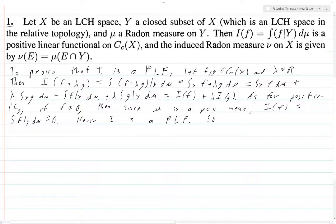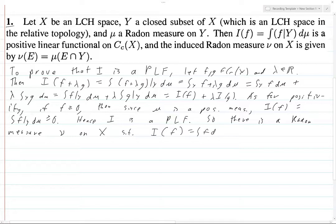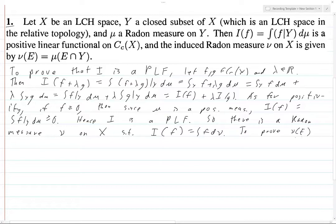So there is a Radon measure ν on X — it's unique, but who cares. That's kind of important because the issue of where things are defined is important in this problem, because here μ is defined on Y. So I(f) equals the integral of f dν. We want to prove ν(E) equals the measure of E intersect Y for all sets E.